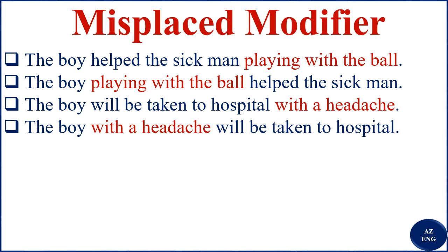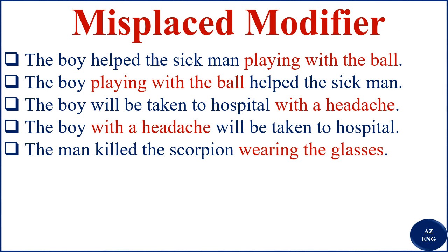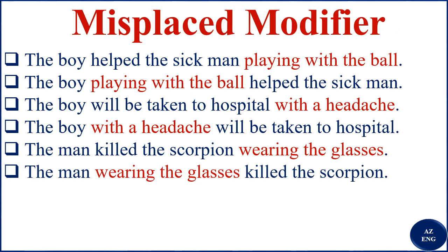'The man killed the scorpion wearing the glasses' — based on placement, it reads as if the scorpion was wearing the glasses. Does it make sense for a scorpion to wear glasses? The intended meaning is that the man was wearing the glasses. So the correct placement is: 'The man wearing the glasses killed the scorpion.' Now 'wearing the glasses' is close to 'the man' and modifies the man, not the scorpion.